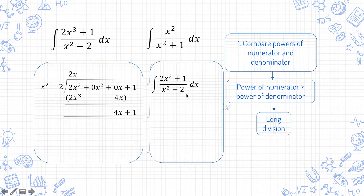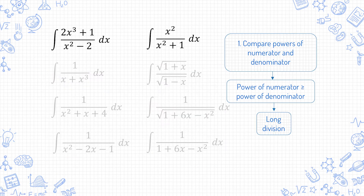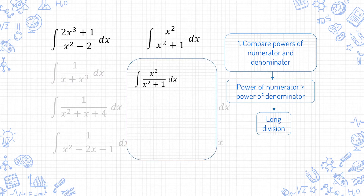So 2x cubed plus 1 over x squared minus 2 is an improper fraction, but if you want to express it as a proper fraction after doing the long division, first you pull out the quotient — 2x — then plus the remainder: 4x plus 1 over x squared minus 2. Alternatively, for easier questions like this, you can actually work out the quotient and remainder without doing long division.